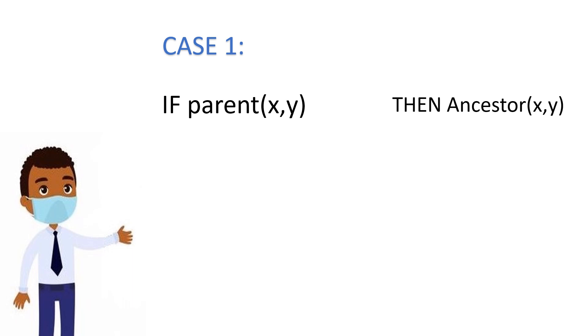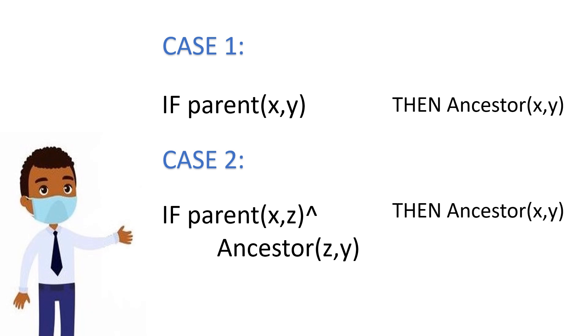Case two: predicate parent(x,z) and ancestor(z,y). If z is the parent of x and y is the ancestor of z, then we can easily say that y is the ancestor of x. One way to see the representational power of first-order rules is to consider the general-purpose programming language Prolog.